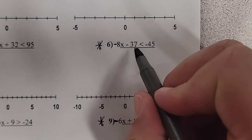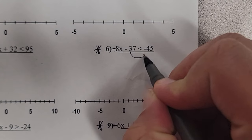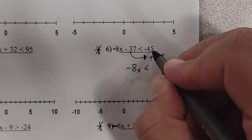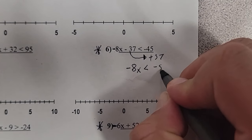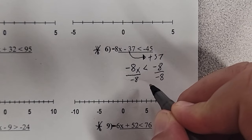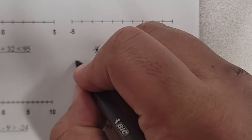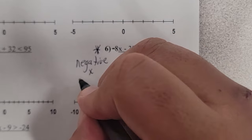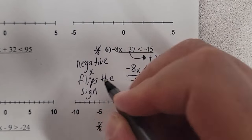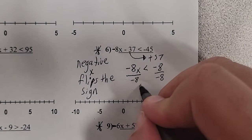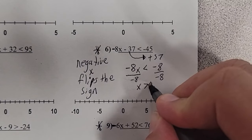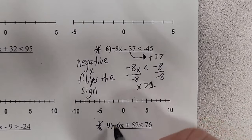Let's solve it the way we normally would. I put the 37 to the other side — it becomes plus 37. So rewriting: negative 8x is less than negative 45 plus 37, which is negative 8. Now there's a rule: when you divide by a negative number, you need to flip the sign. So negative x flips the sign — copy that down. It only applies when it's a negative x number.